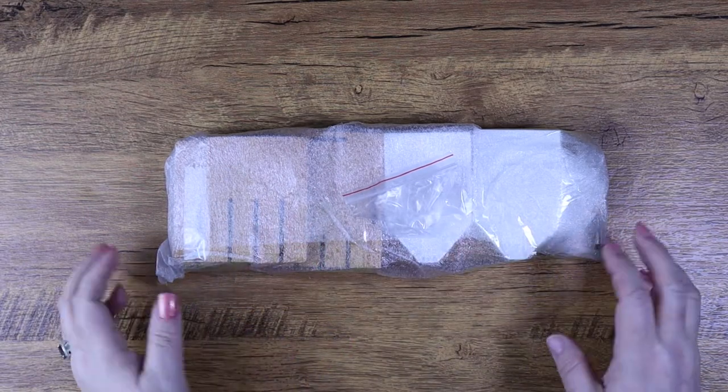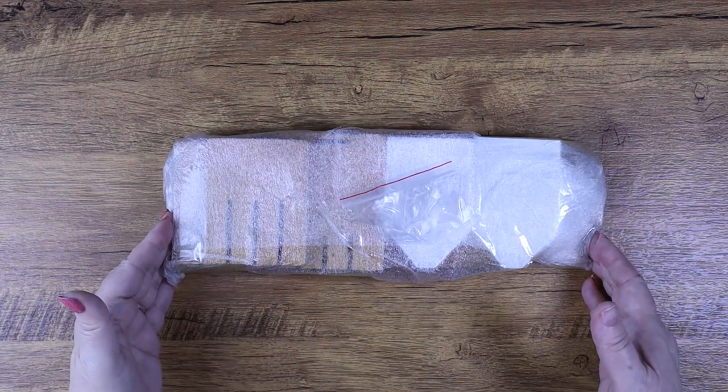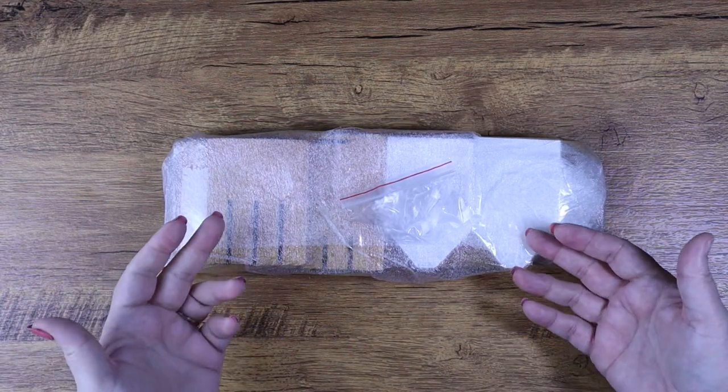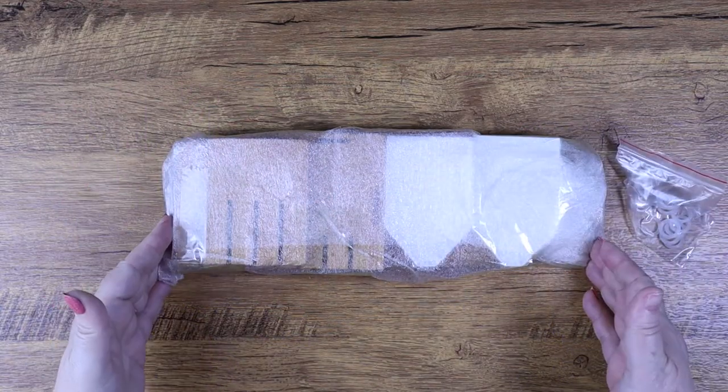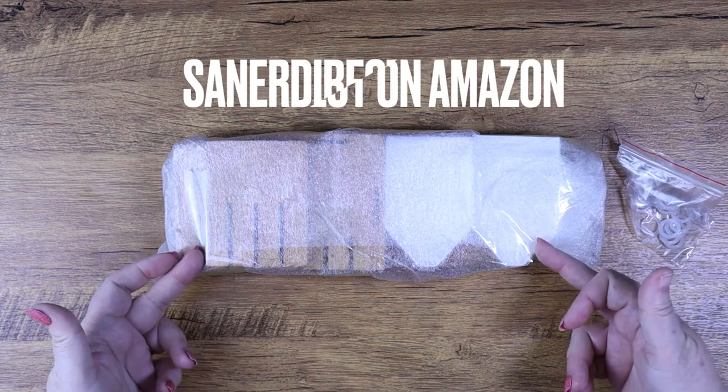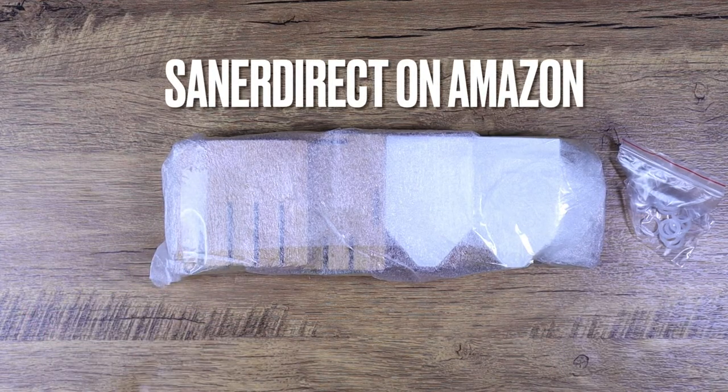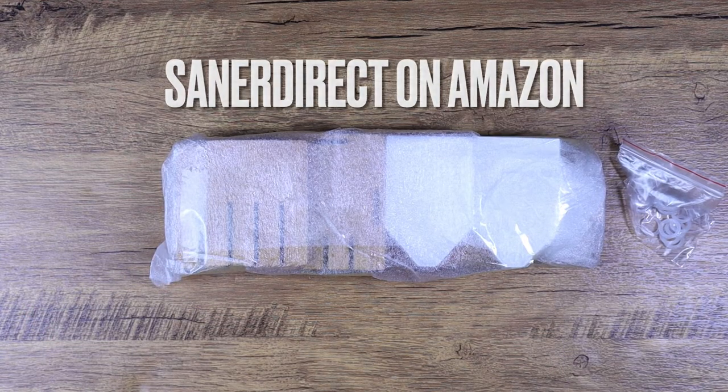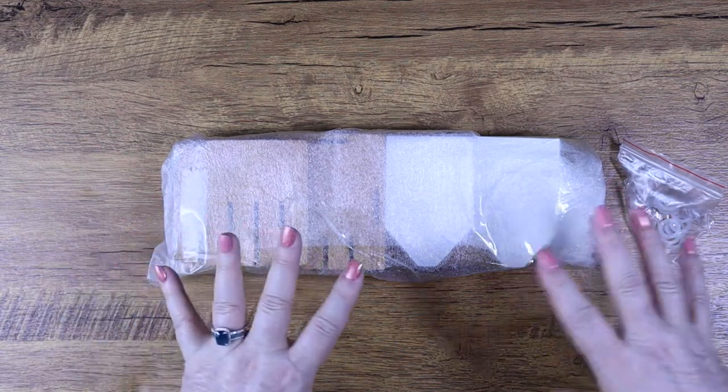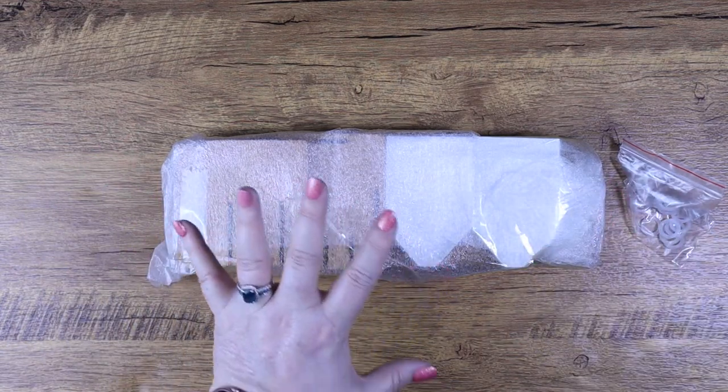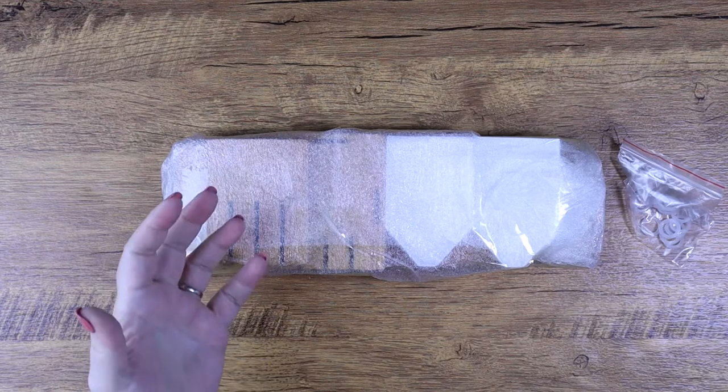Hello everyone, this is Melanie from Melanie B's Creative Studio. What you're looking at might look a little crazy because it's still wrapped up, but we're going to talk about the 16-grid system from Saner Direct on Amazon. This is a diamond painting tool that is super cool. It's made of wood and is basically a multi-boat tray holder for your diamond painting boats.